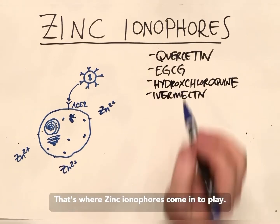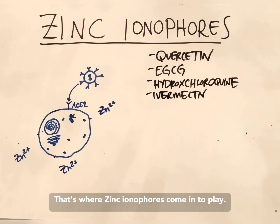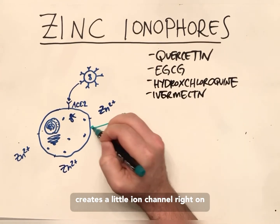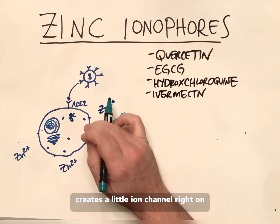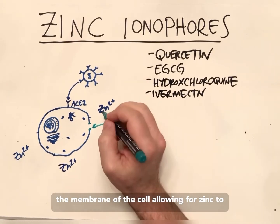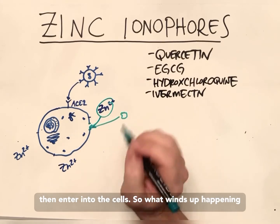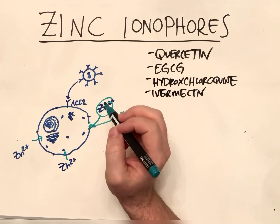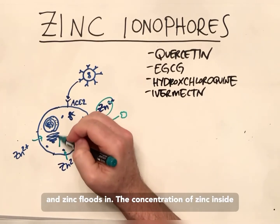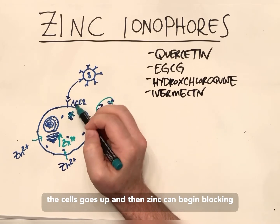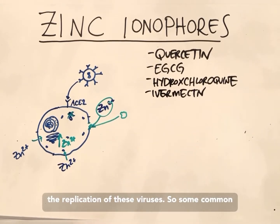That's where zinc ionophores come into play. A substance like quercetin comes in and creates a little ion channel right on the membrane of the cell, allowing zinc to enter. What winds up happening is these zinc ionophores attach to the cells, zinc floods in, the concentration of zinc inside the cells goes up, and then zinc can begin blocking the replication of these viruses.